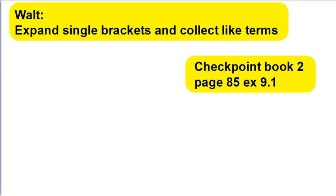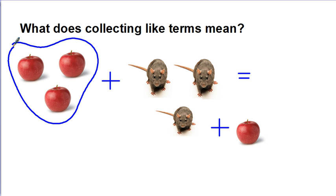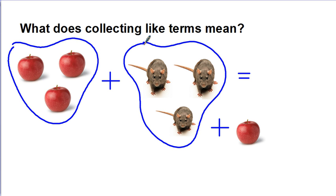The first thing I'm going to do before we get started is look at the keyword 'like terms'. What does like terms mean? Think about some apples and some mice. Here I've got three apples, three mice, and another apple. Which ones can I add together? It's quite clear that I can only add the apples together because they're the same thing. This is what I mean by like terms — like terms is basically when you can add things that are the same.